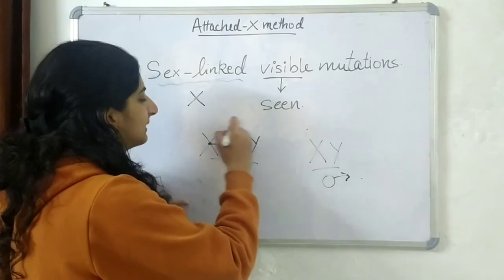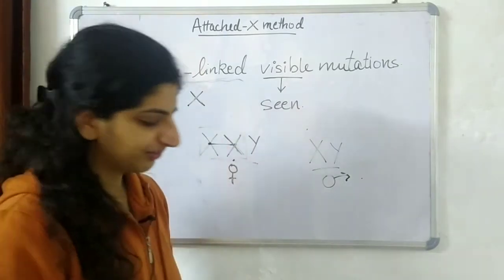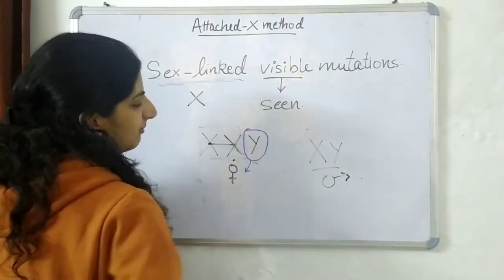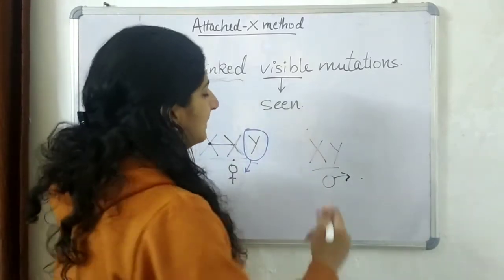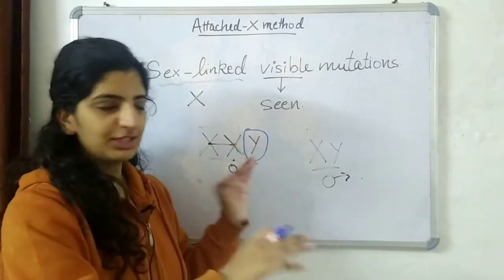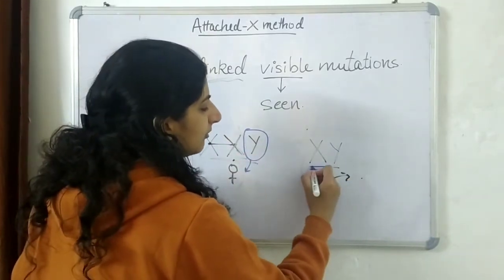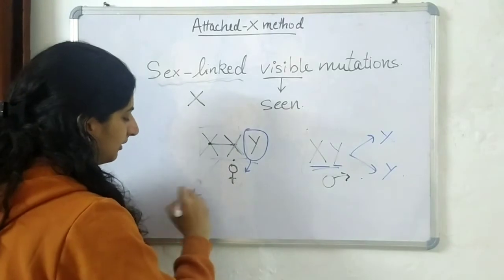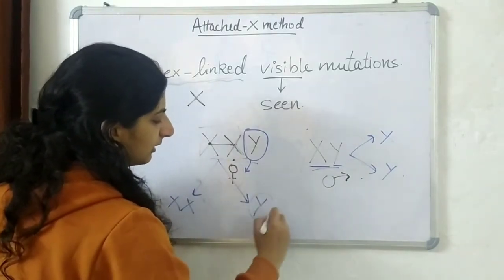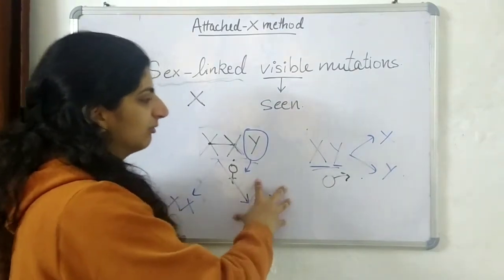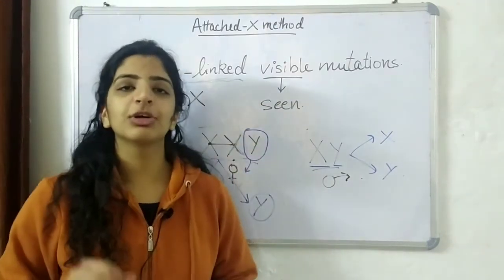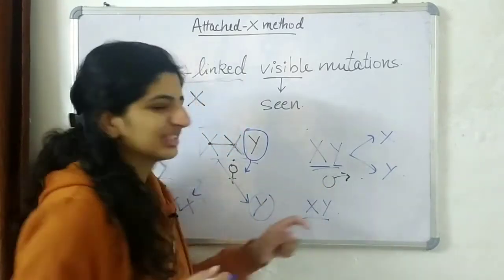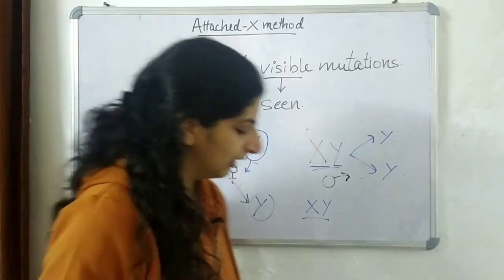In normal XY inheritance, the female always gives the X chromosome and the male decides the sex of the progeny by giving either X or Y. However, in this situation, since both X chromosomes are attached to each other, the Y chromosome also comes from the female in the progeny. So when we cross these two organisms, the male gives X or Y, but the female gives XX or also a Y. Therefore, if a daughter is formed, she receives the X from the male and Y from the female — the opposite of what happens normally.